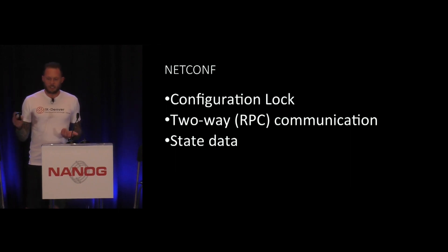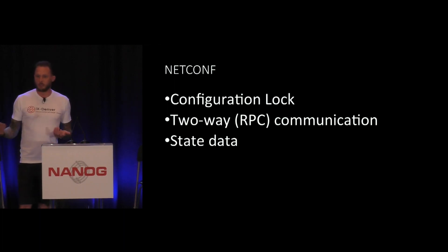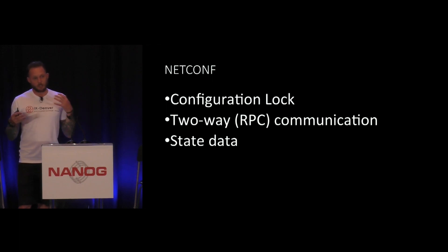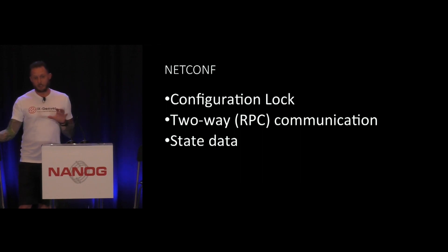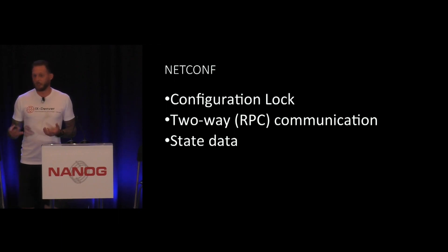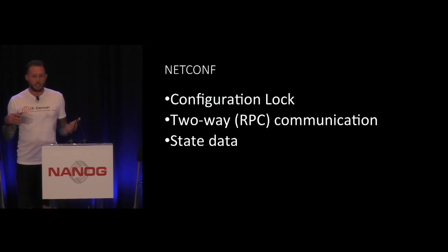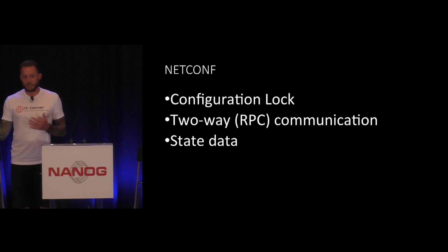NETCONF also defines the idea of state data, which handles the other direction of information flow. In automation or SDN, you're really trying to do two things: put information into the network through configuration, and get information out of the network through telemetry. State data defines those events and things you can pull out, so you can get telemetry-like data through the same API — either in addition to or in support of configuration changes. You can actually verify that changes were made and had the intended effect.